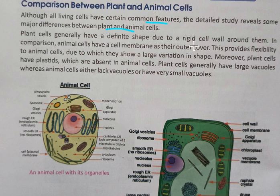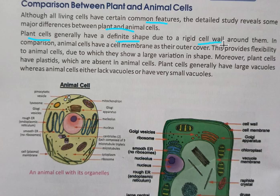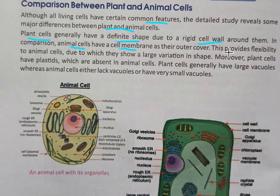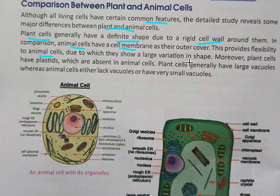Plant cells generally have a definite shape due to a rigid cell wall. Animal cells only have a cell membrane — cell membrane and cell wall are different. Plant cells have both a cell wall and a cell membrane, but animal cells only have a cell membrane. This provides flexibility to animal cells, so their shape can change, allowing large variation.